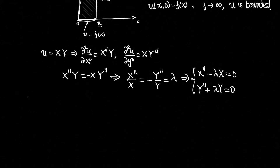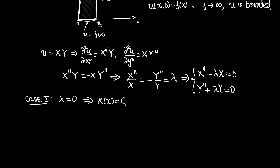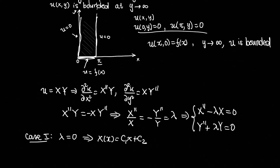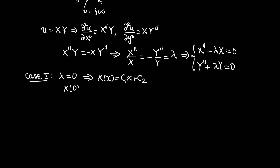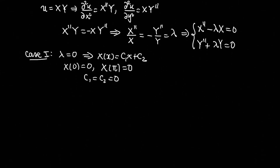Case 1: λ = 0. Then X = c₁x + c₂. Applying the boundary conditions X(0) = 0 and X(π) = 0, we find c₁ = c₂ = 0, giving the trivial solution u(x,y) = 0. This is no solution, so we move on.